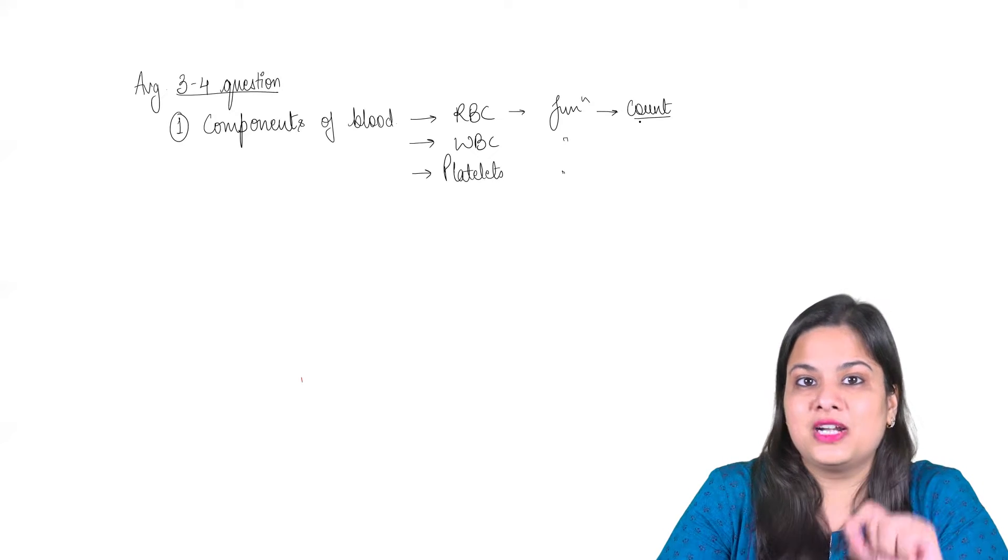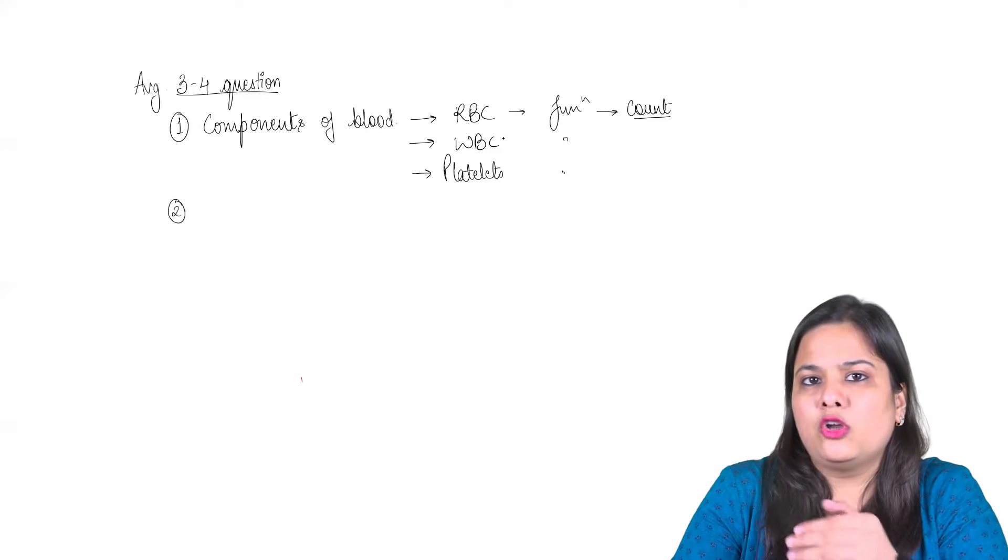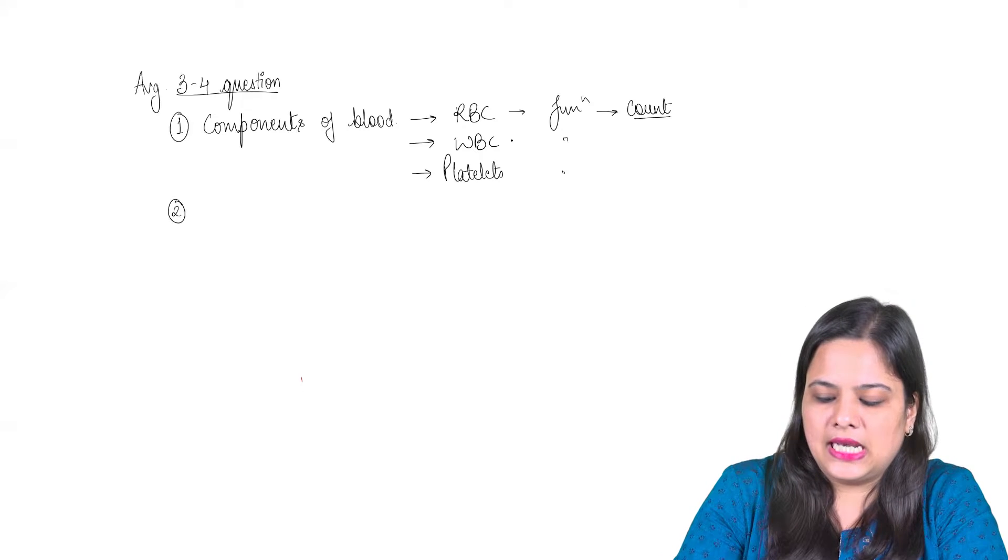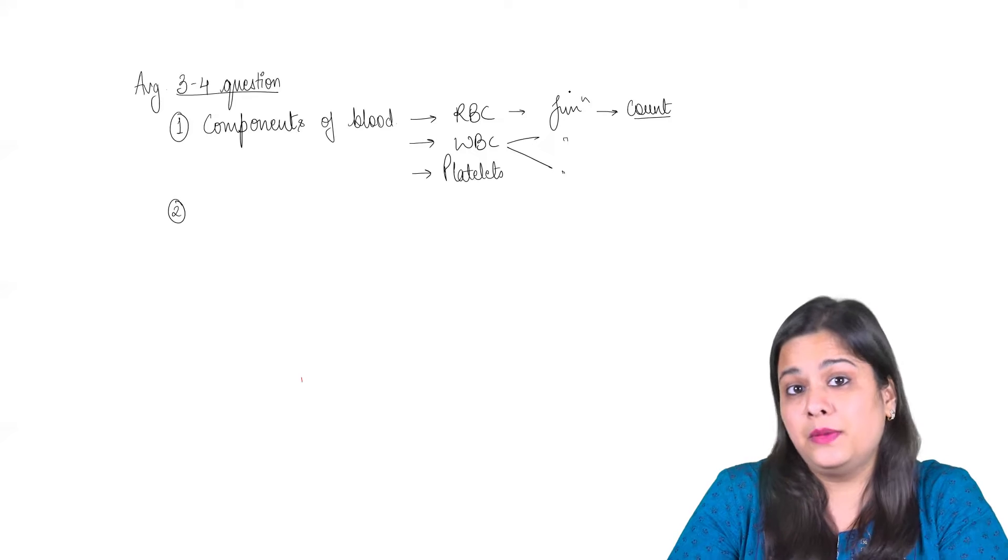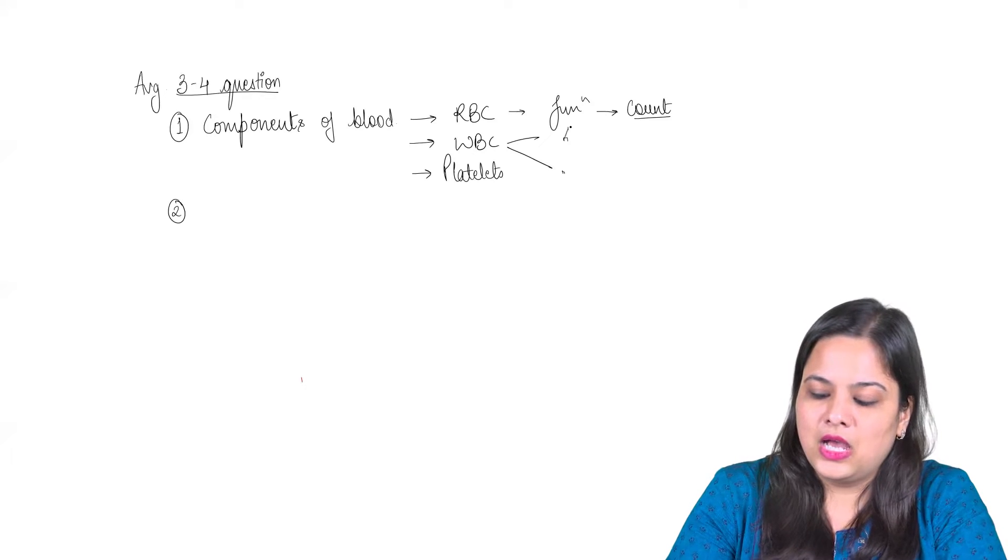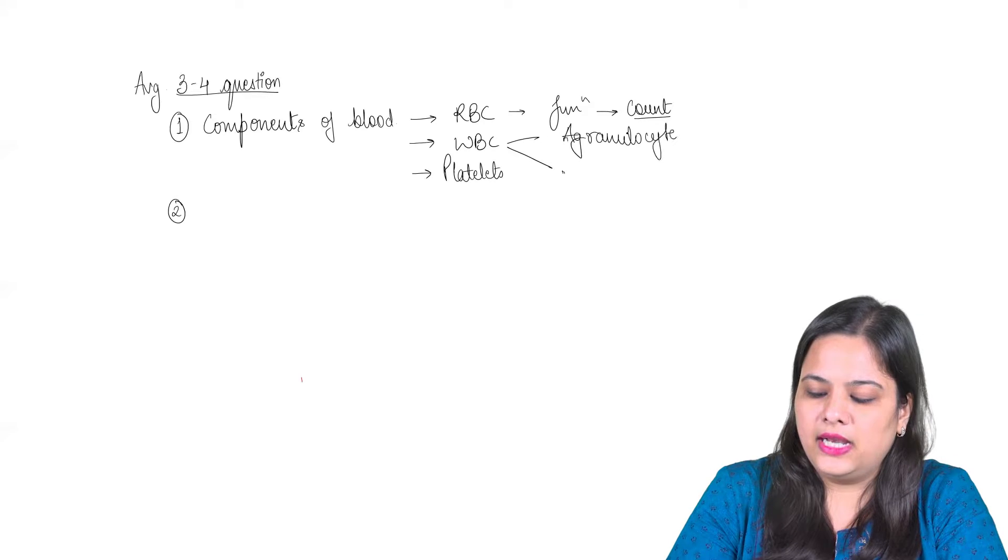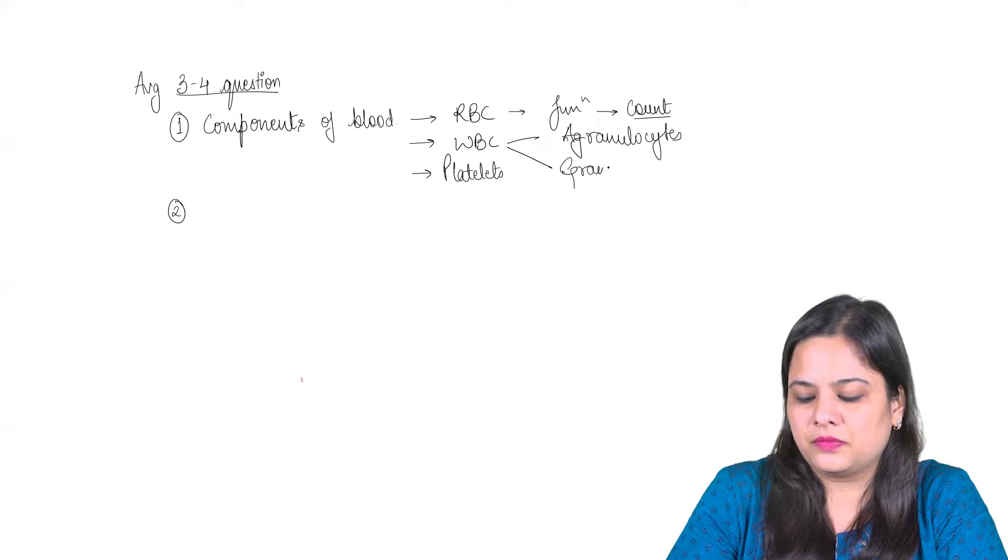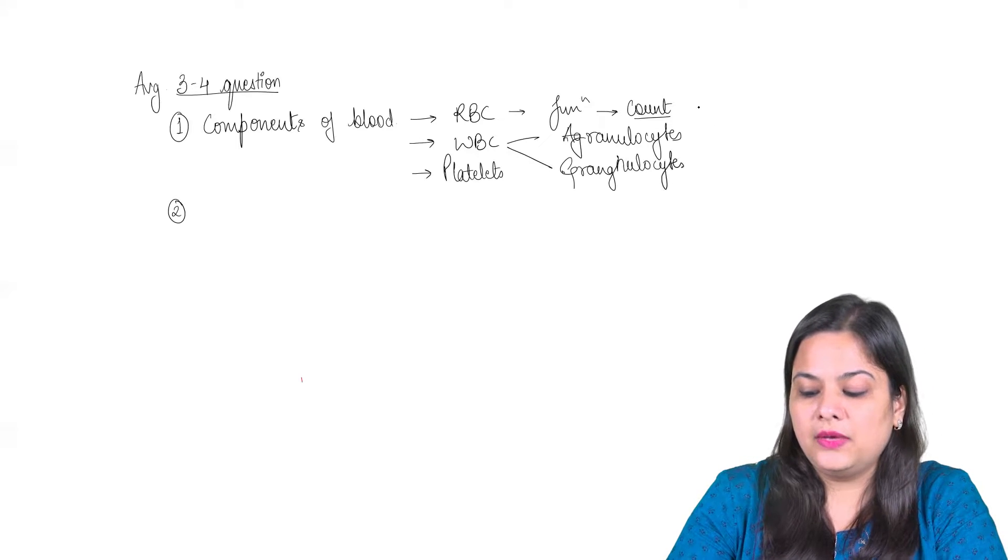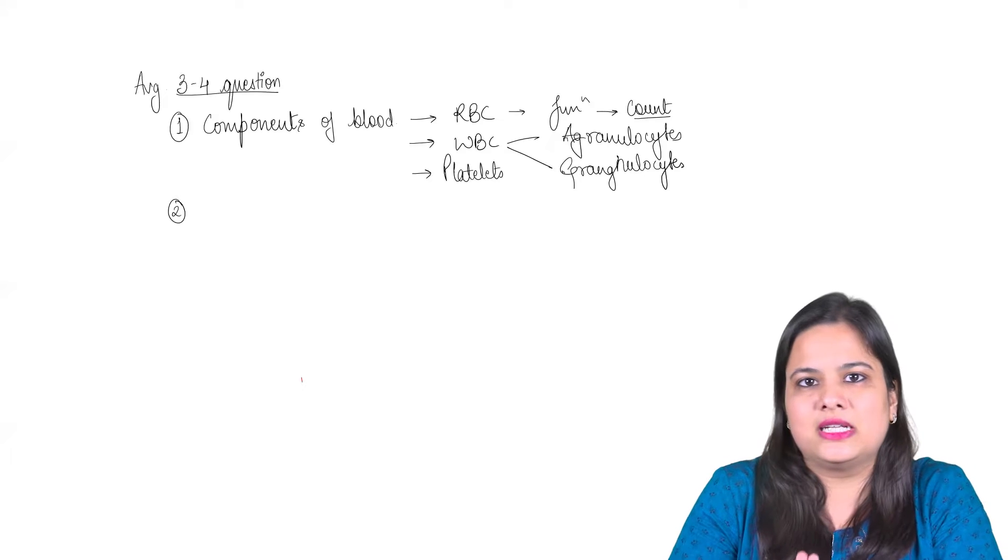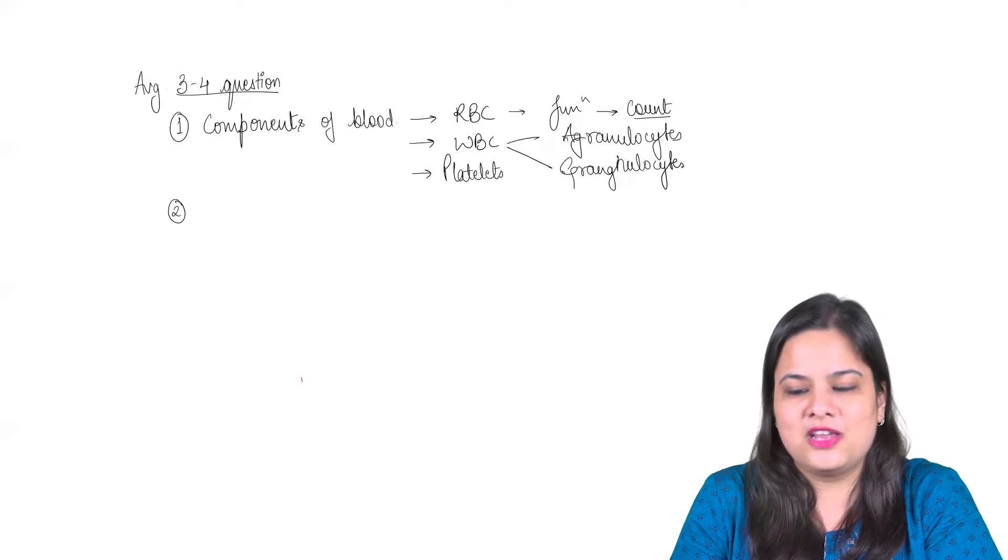So this is one of the most important and fundamental things from this particular chapter. The next thing is, I will talk about WBC in a little more detail actually. Here the specific thing that is asked, you must be already familiar with the types of WBCs that are there. We divide them into agranulocytes and granulocytes, isn't it? So their overall structure, how agranulocytes are different from the granulocytes, these type of questions are also quite common from this particular area.